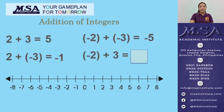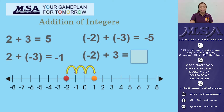How about negative 2 plus 3? So again, plot negative 2 on the number line. And then move 3 units to the right — 1, 2, 3. We end up at 1. So the sum is equal to 1.